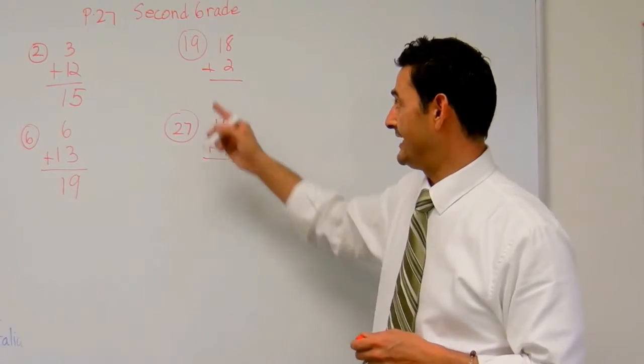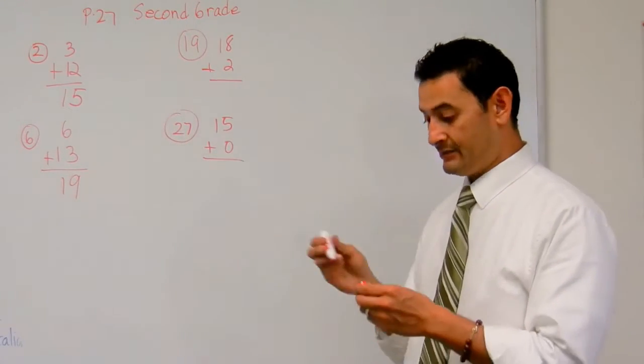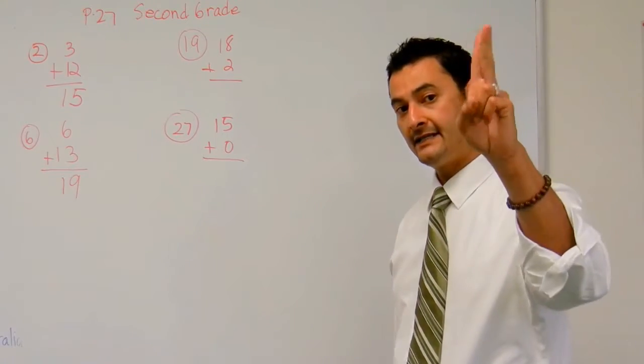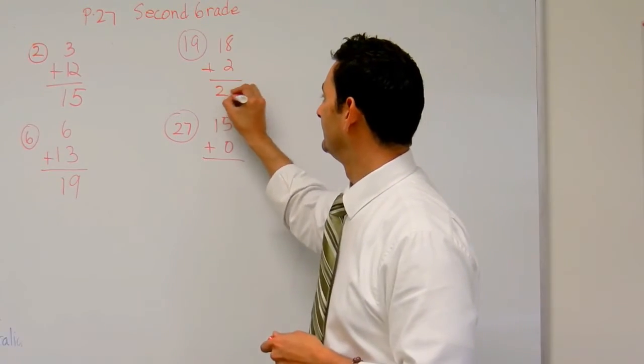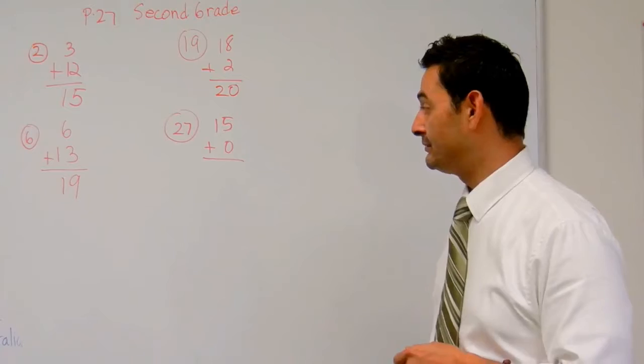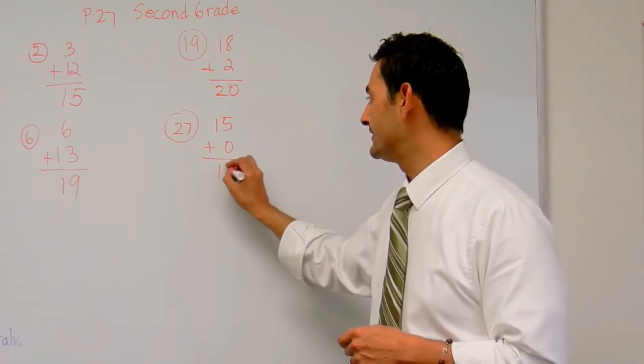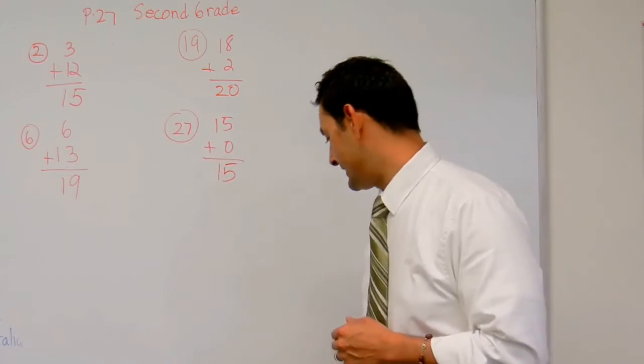Now let's take a look at number 19. Here we have 18 plus 2. Go ahead and put 18 in your head, 2 more: 19, 20. And we have 15 plus 0. 15 plus nothing is 15, and that's number 27.